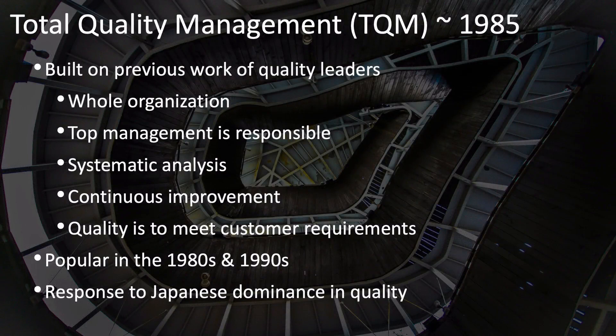Total quality management has uncertain origins, but is an attempt starting in the mid-1980s to bring together the best quality principles from leaders in quality management. It was a response to the dominance of Japanese manufacturing over U.S. manufacturing. It was quite popular in the 80s and 90s, and is based on principles such as the need for the whole organization to be committed to quality, that top management must take responsibility for quality rather than blaming workers, that quality requires systematic analysis and long-term commitment to continuous improvement, and that the measure of quality is meeting customer requirements.